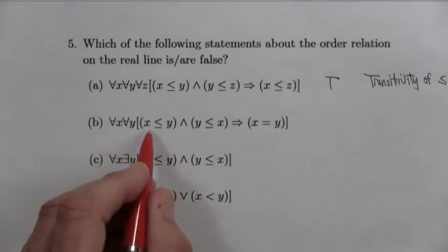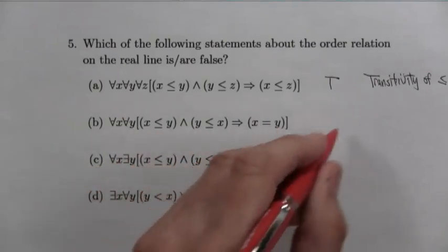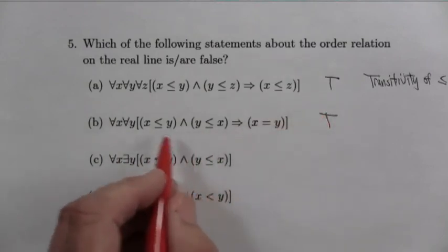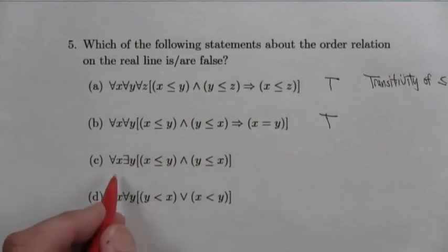What does this one say? For all x, for all y, if x is less than or equal to y and y is less than or equal to x, then x is equal to y. Well, that's true. Okay? The only way you can have x less than or equal to y and y less than or equal to x is if they're actually equal.